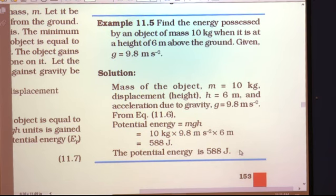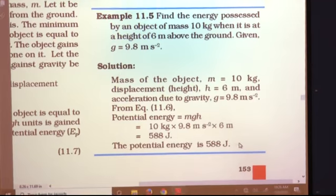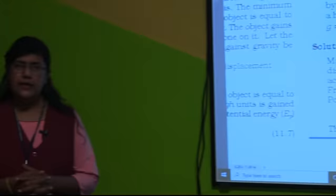Today we discussed kinetic energy and potential energy. We derived the expression for kinetic energy: Ek = ½mv². We solved numericals for kinetic energy, then moved to potential energy, derived its expression Ep = MgH, and saw a solved example. Go through these concepts, mark important points, and prepare MCQ questions. Thank you.